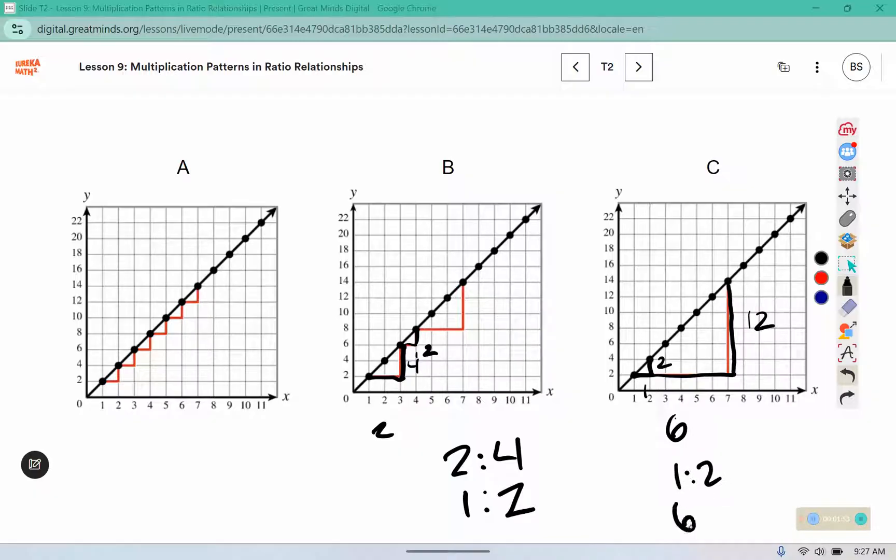And 1 to 2 is the same as 6 to 12, if we just multiply by 6. 1 times 6 is 6, 2 times 6 is 12.